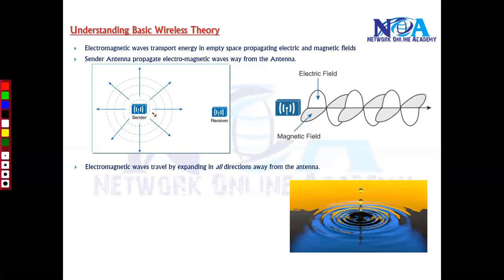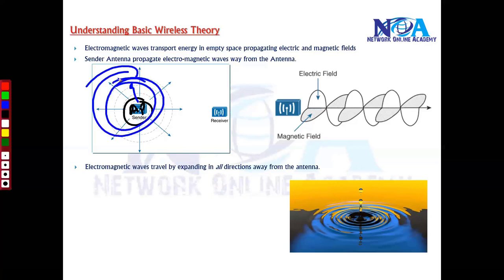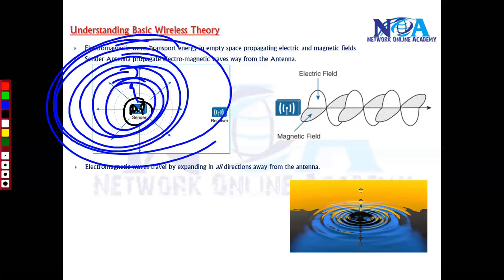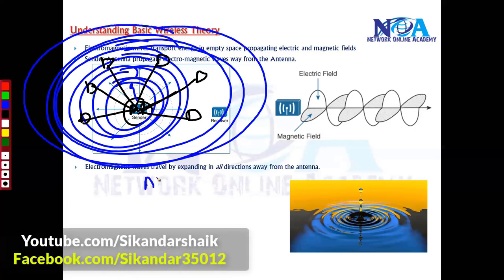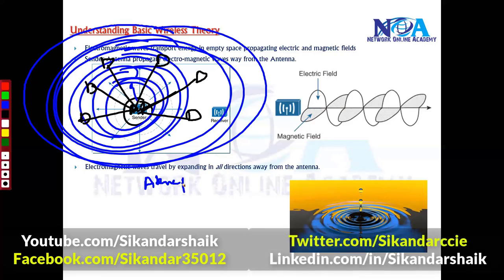Typically, the access point has an antenna and the electromagnetic waves or signals are propagated outwards from the antenna. All devices within this particular coverage area will be able to connect to that centralized device. How long these signals travel totally depends upon the type of device, the type of antenna, and the standards you are using — it depends on multiple factors.